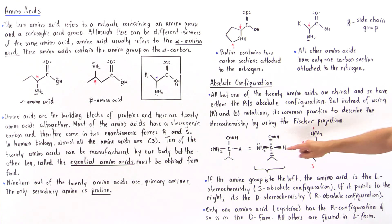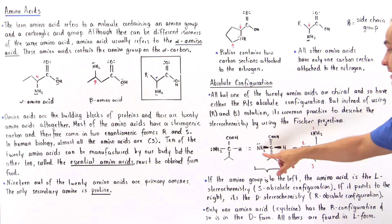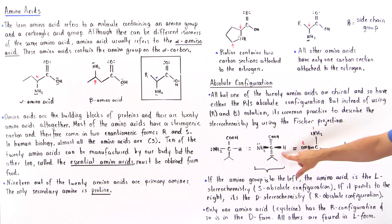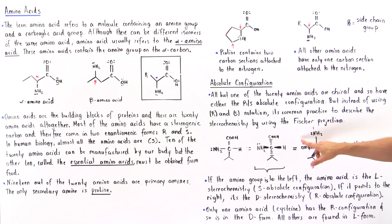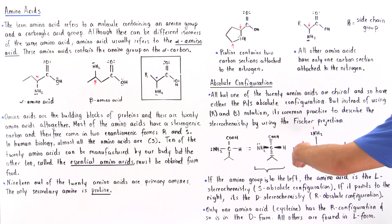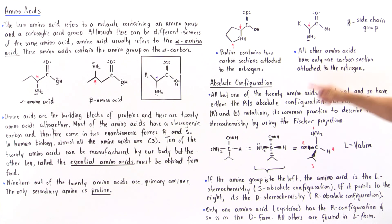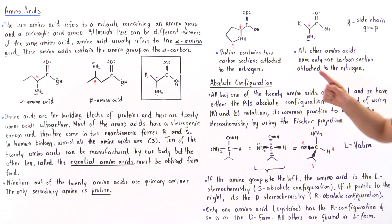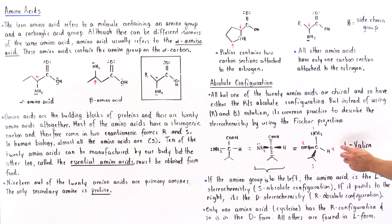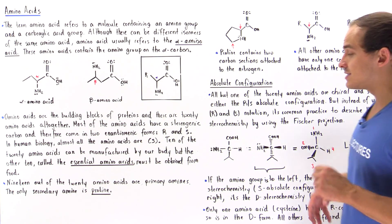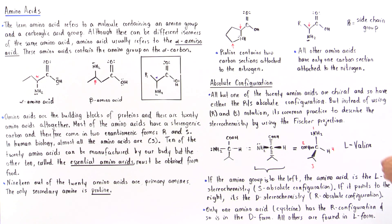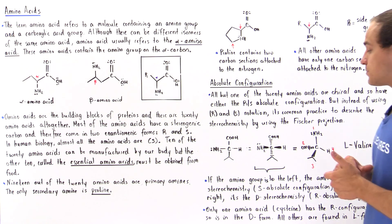In assigning priorities: the nitrogen-containing group receives priority 1, the H receives priority 4, the oxygen-bearing group receives priority 2, and the remaining group receives priority 3. Looking along the bond toward priority 4 and tracing a circle from 1 to 2 to 3 gives a counterclockwise orientation, which corresponds to the S absolute configuration. Therefore, all L isomers of amino acids have the S absolute configuration, and all D isomers have the R absolute configuration.